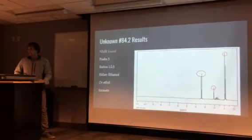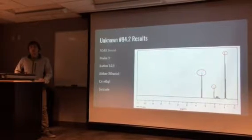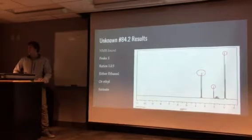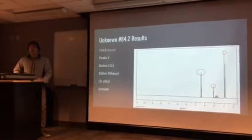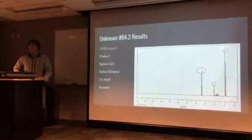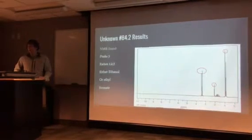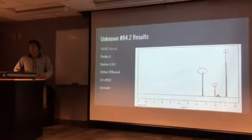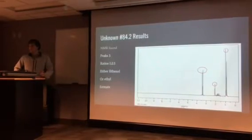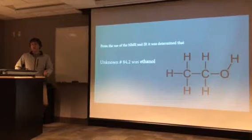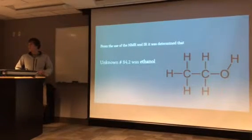From the three peaks, the 1:2:3 ratio, and the functional groups that were found, we could narrow down to two possible molecules that were in the water — either ethanol or ethyl formate. Once we looked further into the functional groups and saw which ones had the matching peaks and ratio, it was determined that unknown number 84.2 was ethanol present in the water.